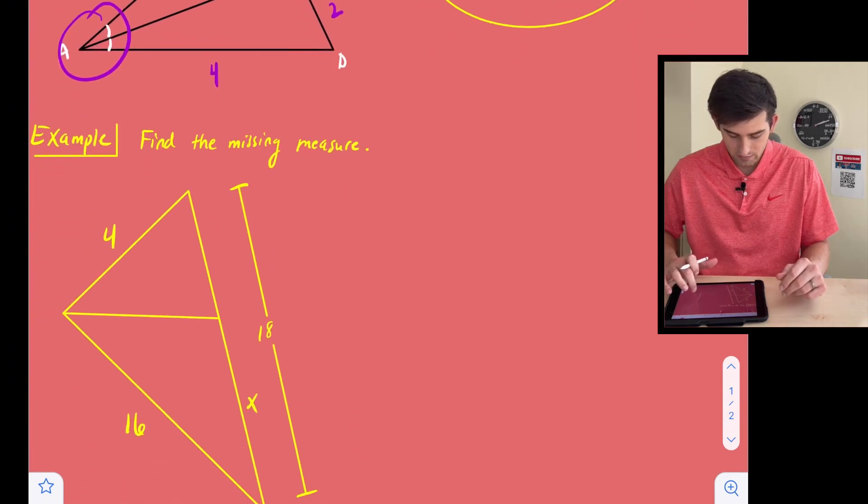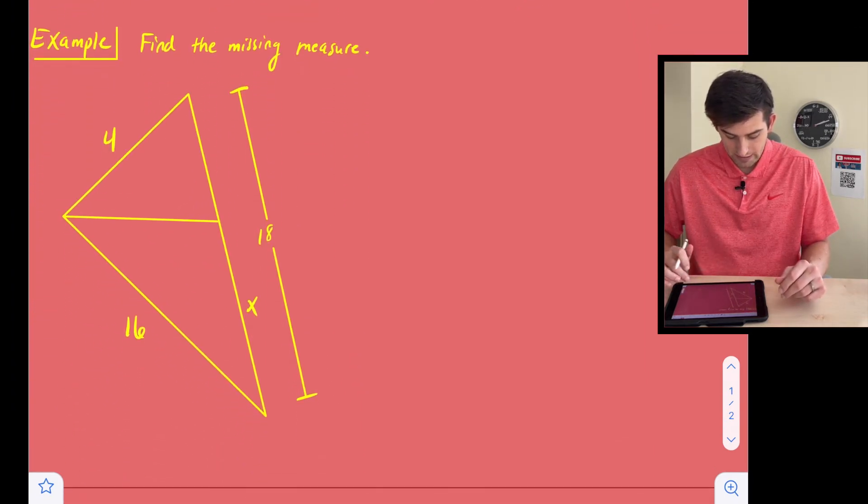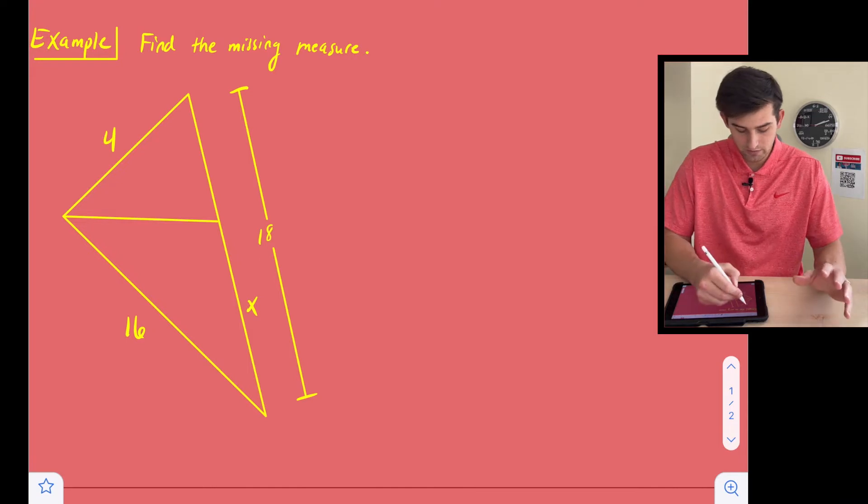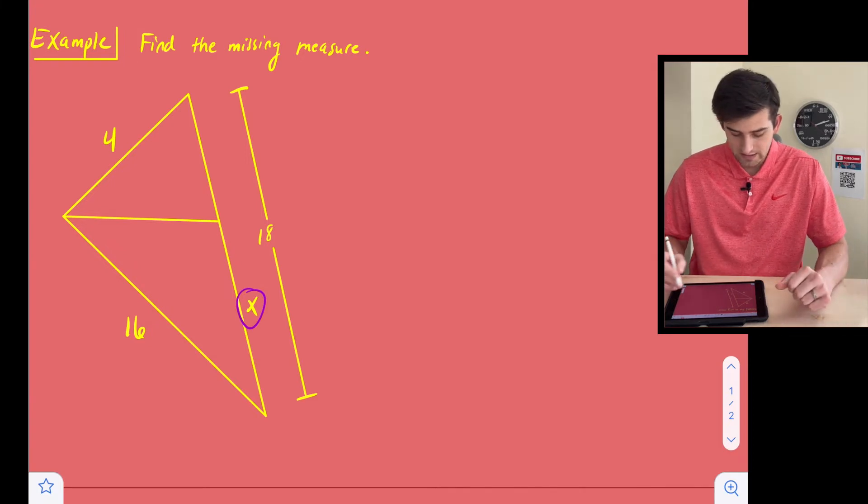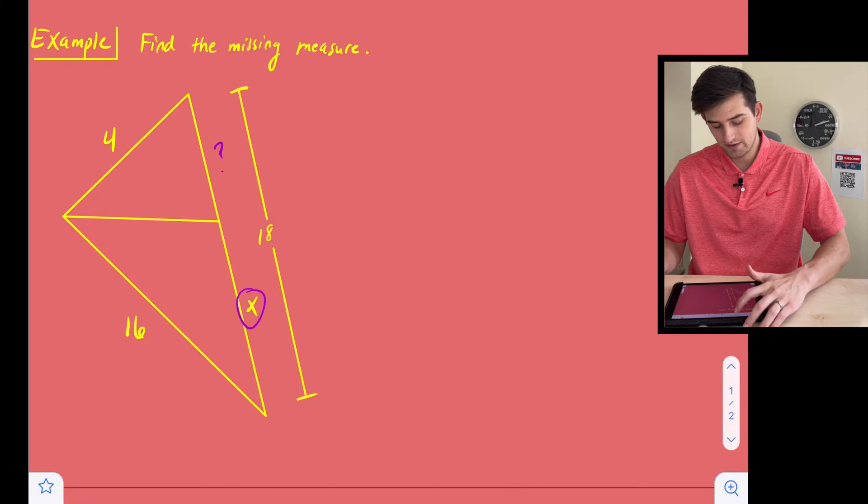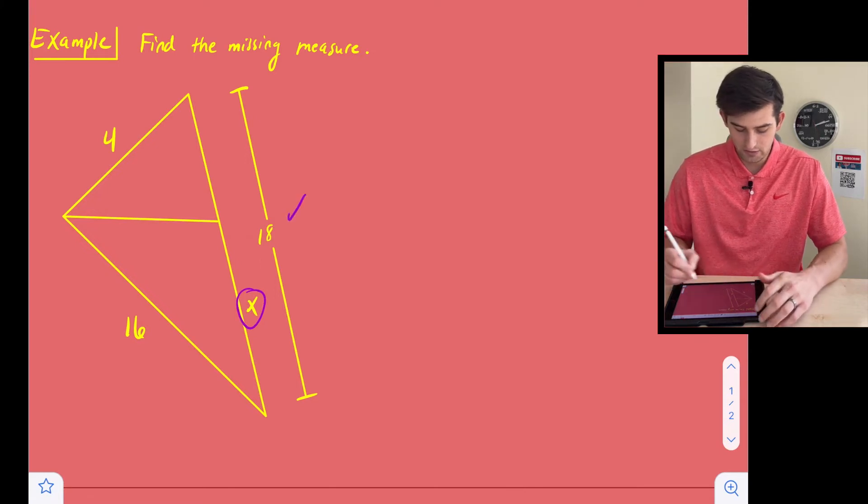So let's take a look at an example. In our example here, we have side length of four right here. We have a side length of 16 down here. We have X is what we're trying to find. And then it tells us, instead of giving us this measure of the smaller triangle right there, it gives us the entire length of the larger triangle.